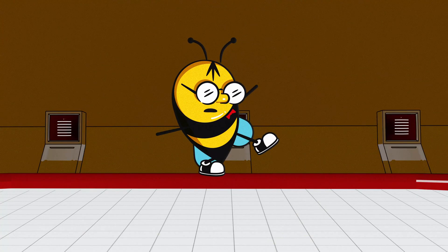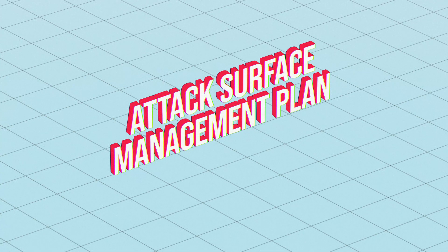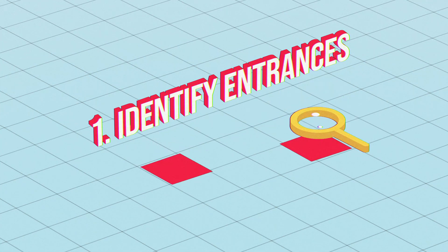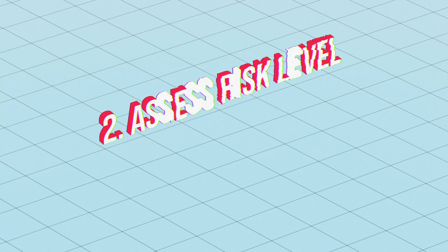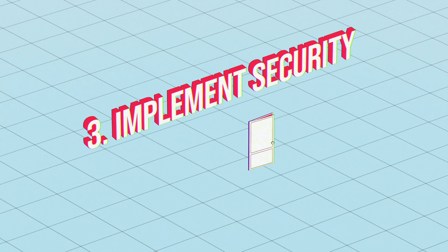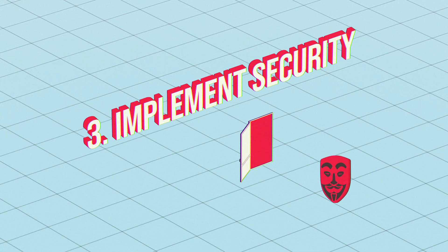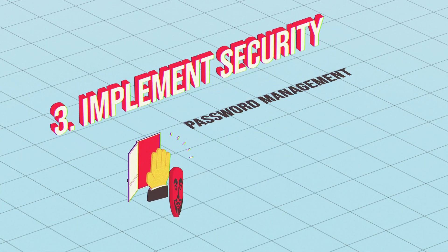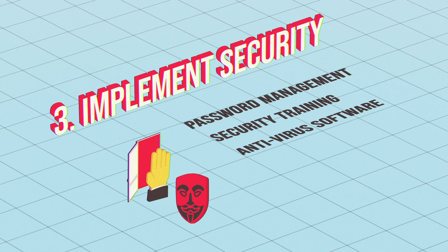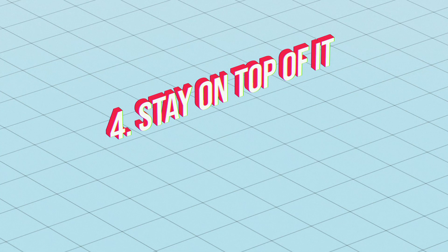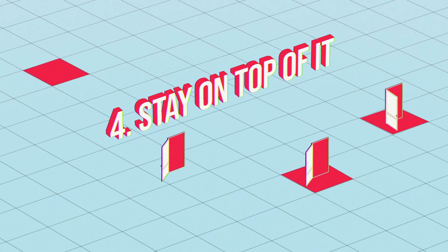Building a plan and effectively managing your attack surface can be broken down into a few key steps. One: identify entrances — scouring your network and business for vulnerable access points. Two: assess risk level — going through those vulnerabilities to measure the risk they pose. Three: implement security — take steps to mitigate the risk of these threats by implementing cybersecurity measures like password management, security training, antivirus software, network monitoring tools, and whatever else is needed.